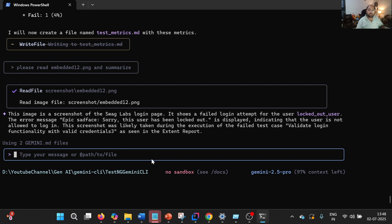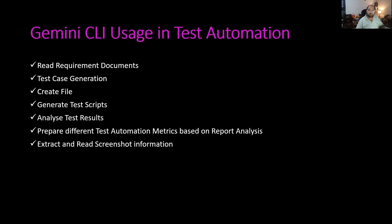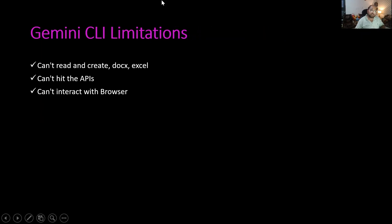So this is how we can utilize Gemini CLI for test automation. However, it cannot read or create Word documents or Excel files — though it can generate and read CSV, which we have utilized. It cannot hit APIs directly from here, and it cannot interact with the browser in the way Selenium does. In order to add those capabilities, we need to integrate with MCP. This is what we are going to cover in the next lecture — integrating an MCP server with Gemini CLI.